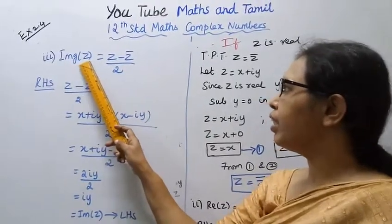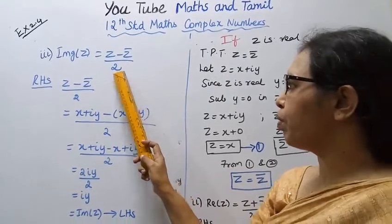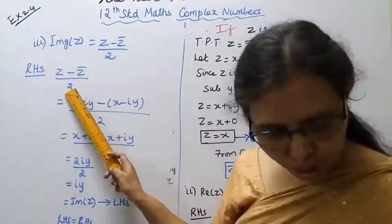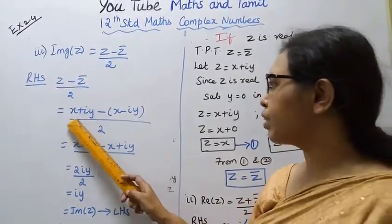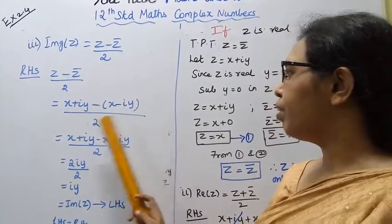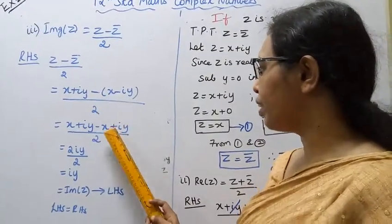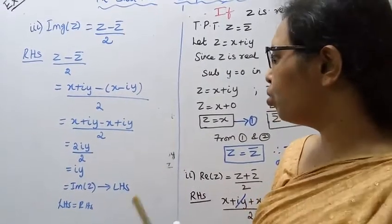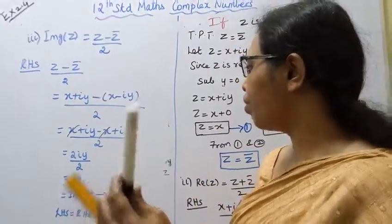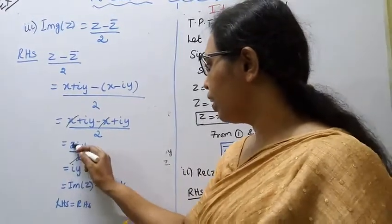Third: the imaginary part of z equals (z minus z̄) divided by 2i. We have z equals x plus iy and z̄ equals x minus iy, so (z minus z̄)/2i equals (x plus iy minus (x minus iy)) divided by 2i. The x terms cancel, leaving 2iy divided by 2i, which equals y — the imaginary part of z.